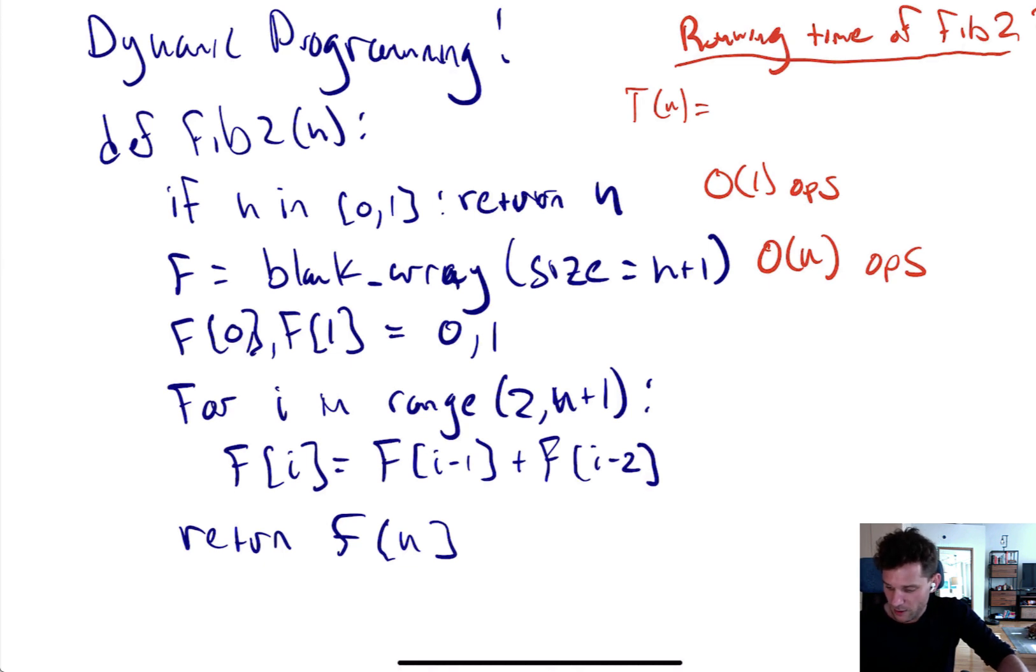The next line in this code is to just initialize the first two values. Again, this takes O(1) operations, O(1) steps, because it just has to fill in two values in the array. Nothing scaling with n here. And then you have to do a loop that has roughly n-1 iterations of this O(1) operation. The O(1) operation is looking up the previous two values, adding it together, and then filling that in to the ith value. It has to do that n-1 times an O(1) operation.